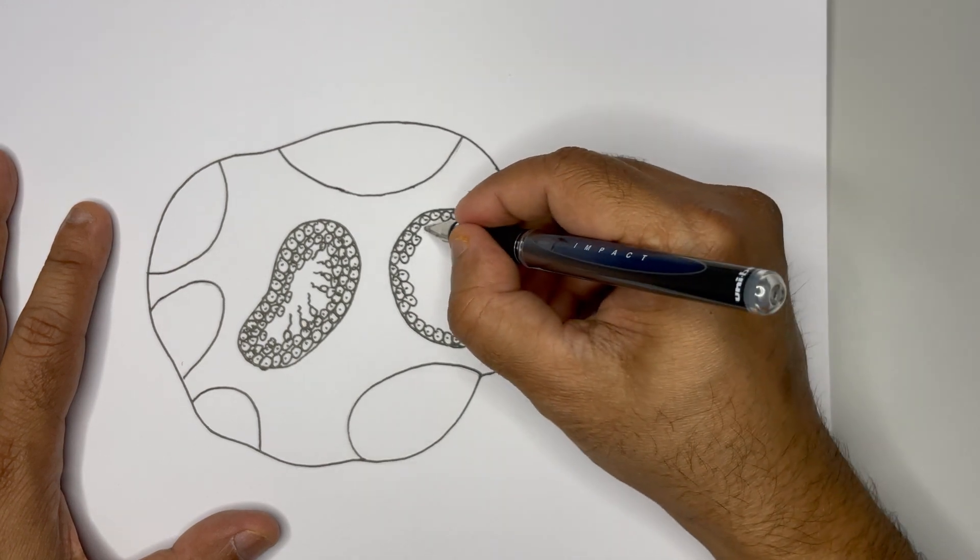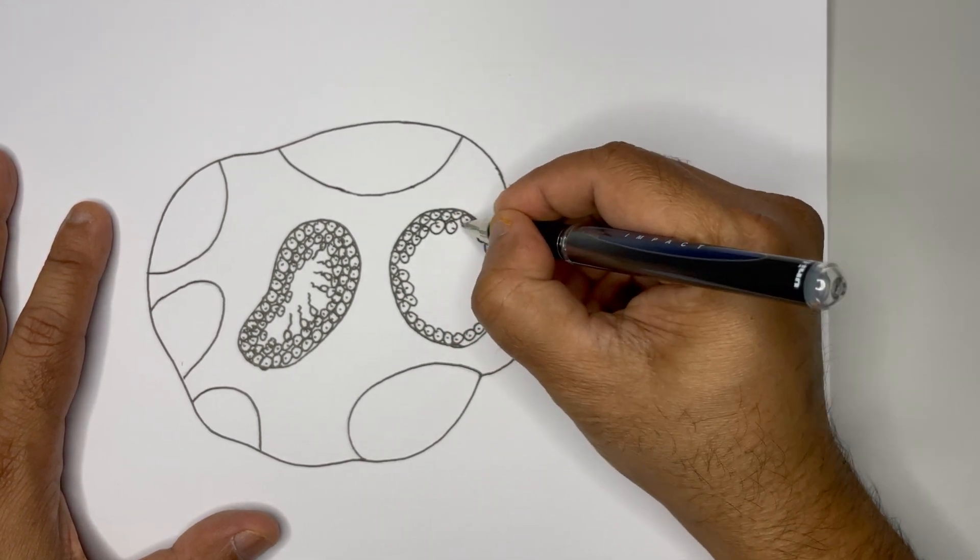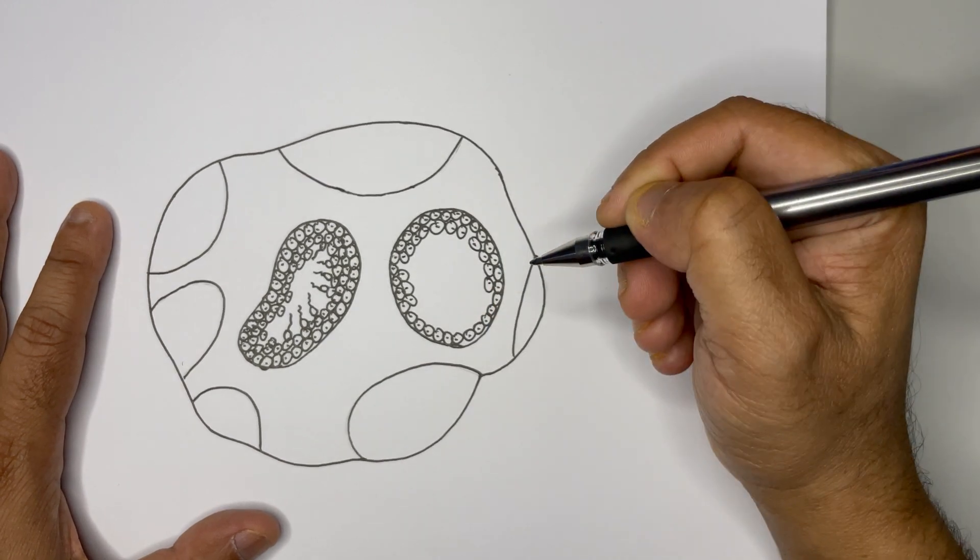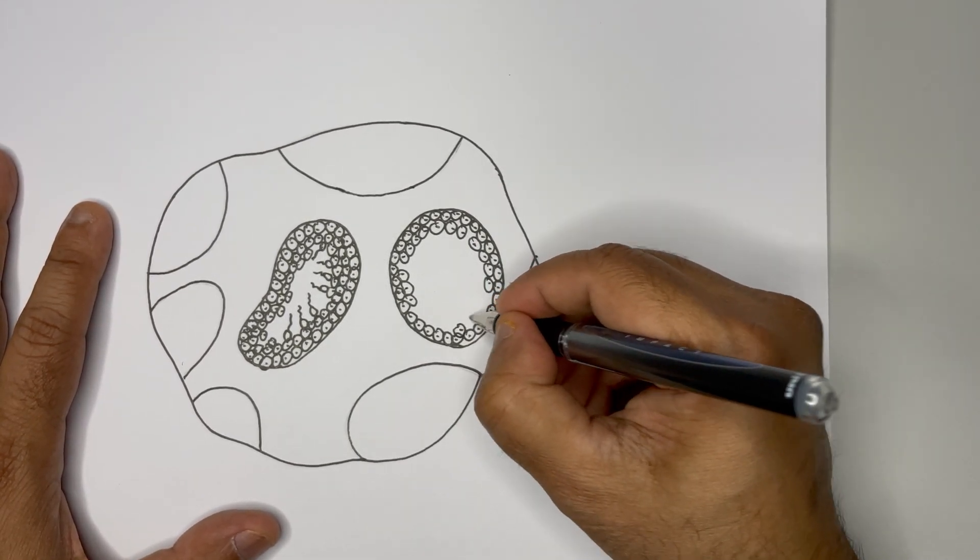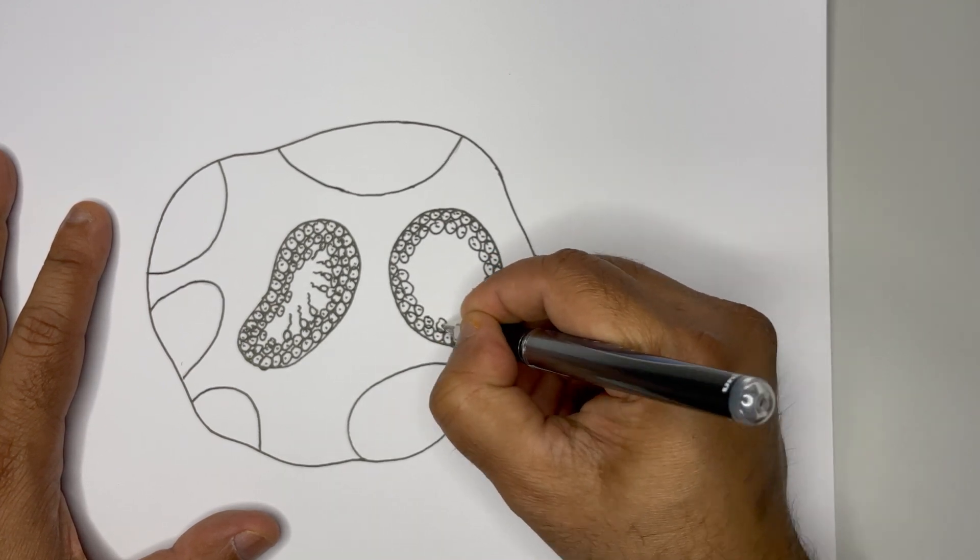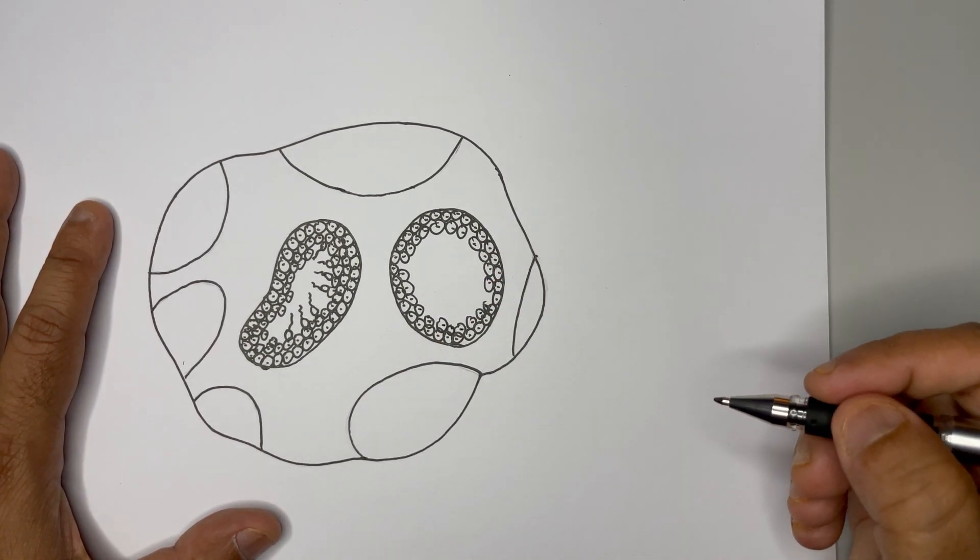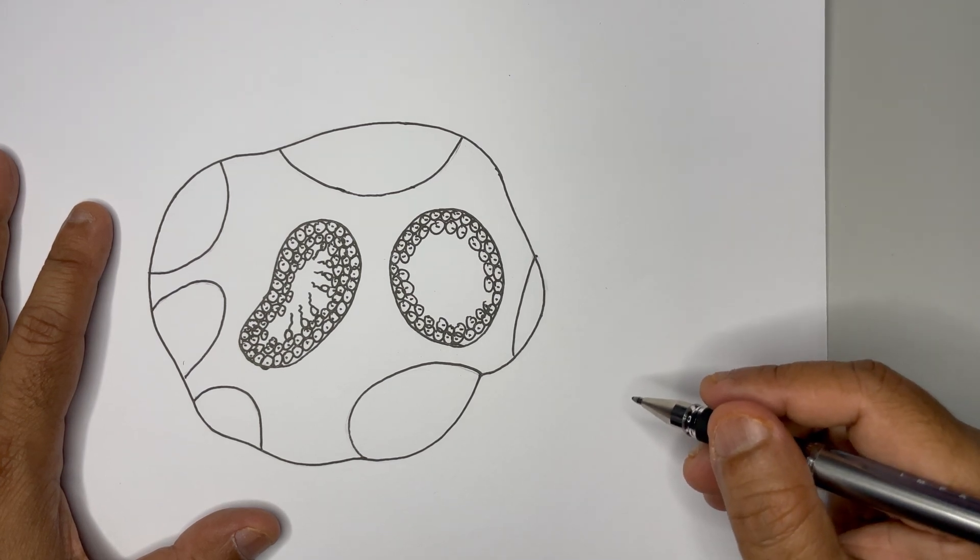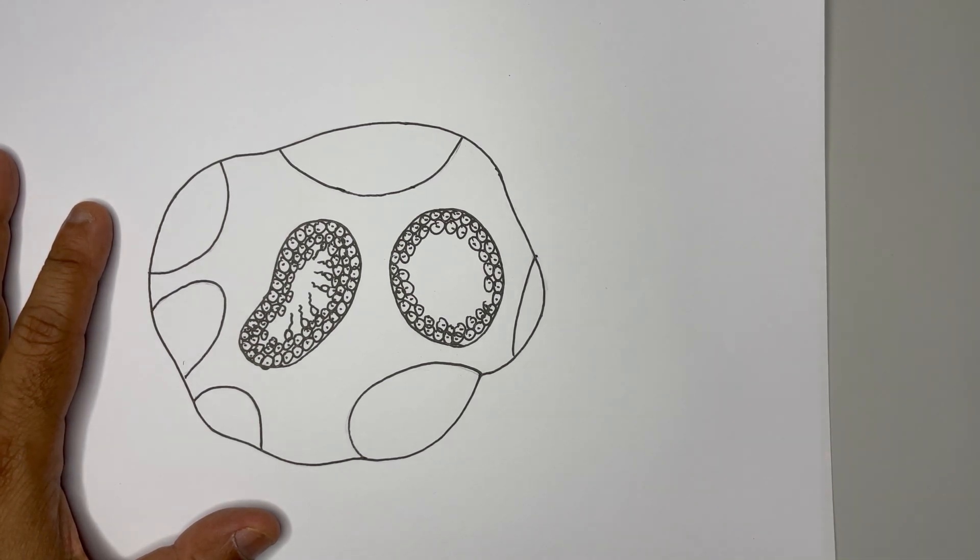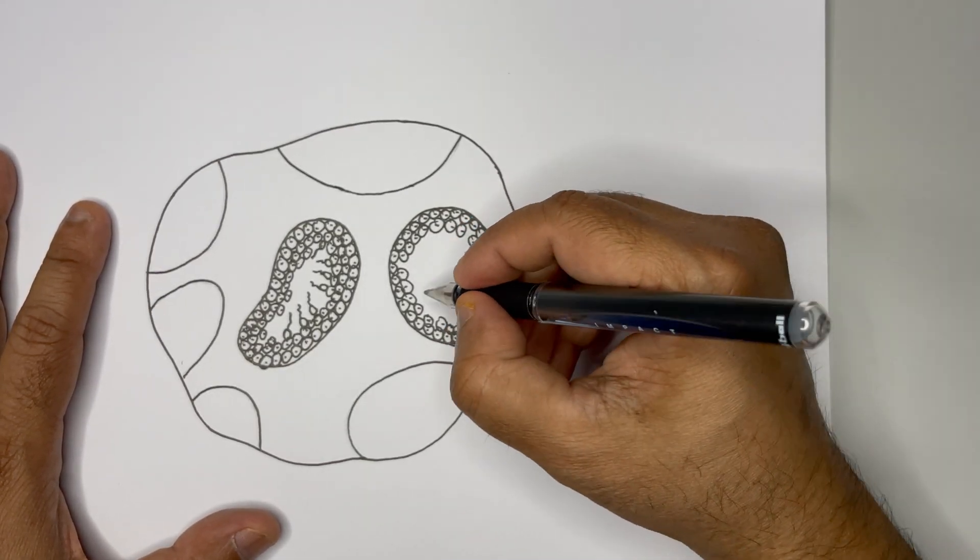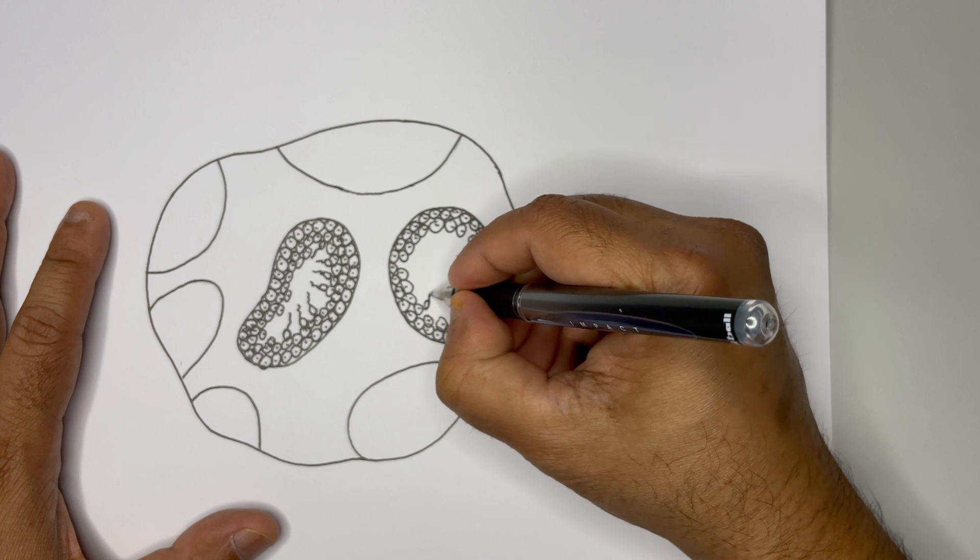Some students I notice they won't study well or they are not very good at scoring in written exams, but they draw very good beautiful diagrams and through that they could manage to get some marks. Here also in the middle we are going to draw some sperms. Everywhere you have to draw sperms.